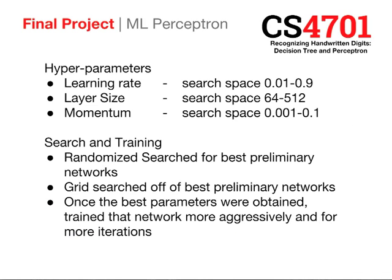For the multi-layer perceptron, we first trained the network and then the hyperparameters. The hyperparameters we chose were learning rate — how fast the weights update after gradient descent — layer size, which is the number of nodes per layer, and momentum, which helps push weights past local minima. For the search and training, we first ran a randomized search to create the best preliminary networks, then ran a grid search off those preliminary networks to find the best local or overall minima. Once the best hyperparameters were obtained, we then trained that network more aggressively for up to 200 iterations.